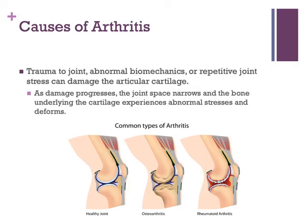There are various causes of arthritis, including trauma to a joint, abnormal biomechanics, or repetitive joint stress. These activities can damage the articular cartilage, which is the covering within the joint that absorbs stress and helps smooth out motion. As the damage progresses, the joint space starts to narrow and the underlying bone starts to experience abnormal stresses and deforms over time. For some people, there is no identifiable cause, and with systemic forms of arthritis, an abnormal immune system response is often the cause of joint destruction.